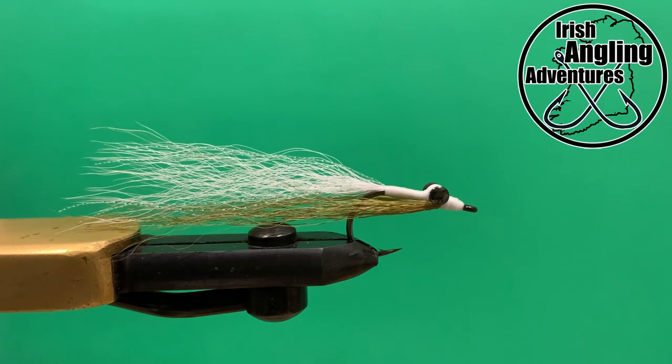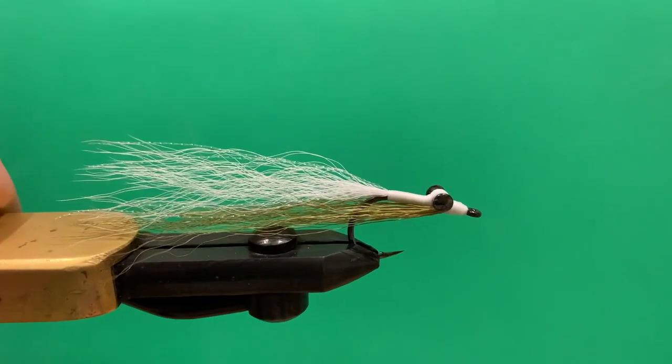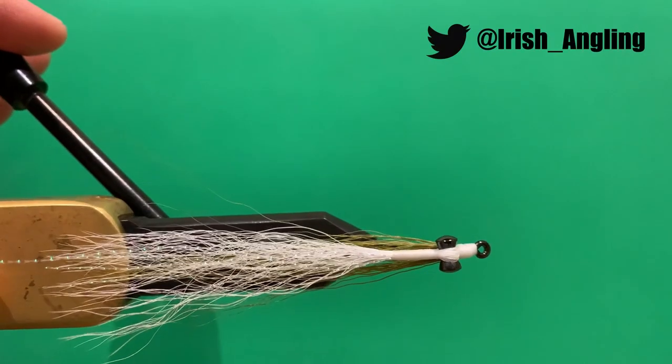Hi, welcome to Irish Wrangling Adventures. Today we're going to be tying a clouser minnow. This is pretty much one of the most well-known saltwater patterns out there.